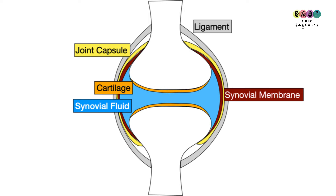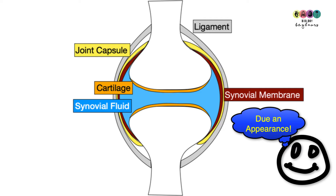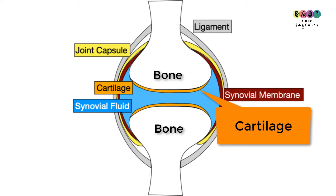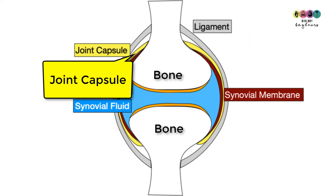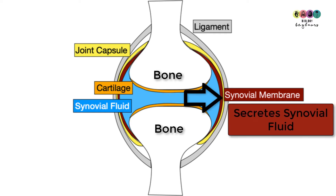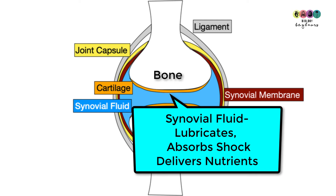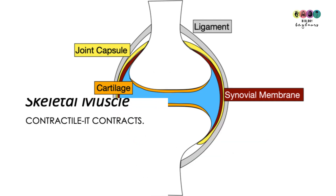You could be asked to draw and label a synovial joint in your exams. Looking through the exam papers, this hasn't appeared for quite a number of years, so you never know — I would practice drawing this diagram. Make sure you put in all the key labels: the bones, cartilage at the ends of the bones, ligaments connecting bone to bone, the joint capsule encapsulating the joint, the synovial membrane inside it, and the synovial fluid lubricating the joint, absorbing shock, and delivering nutrients to the cartilage.